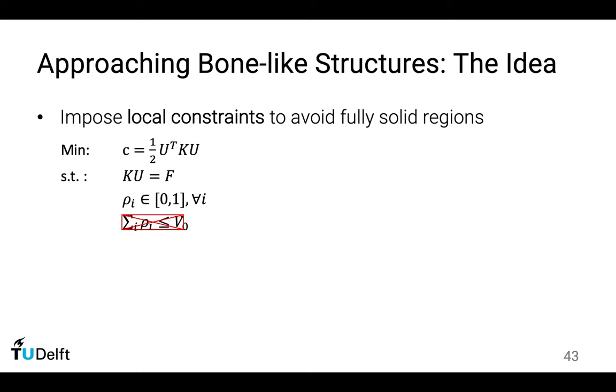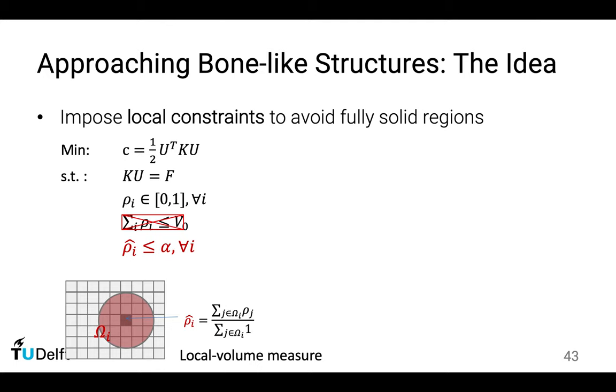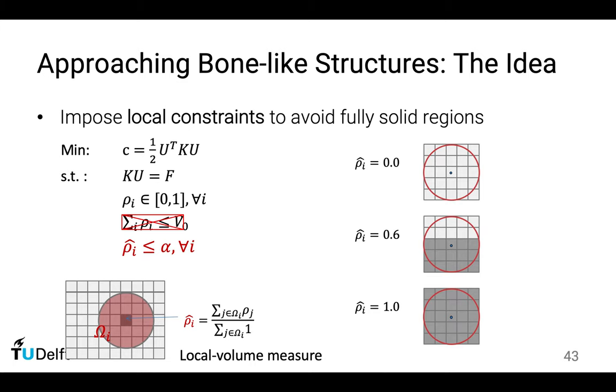What we did is to replace this total volume constraint with a local volume constraint. So we don't consider the volume of the entire domain, but consider the volume in a small neighborhood, and in every small neighborhood around a point in the domain. So if we have this rectangular design domain, we discretize it into many elements, and for each of these elements, we count how many elements in the neighborhood are solid. If this local volume fraction is 0, which means in this neighborhood, none of the elements is solid. If we have a local volume fraction 1, which means the entire neighborhood is solid. We don't want to have a fully solid region, and that's the reason we have an upper bound on the local volume fraction.